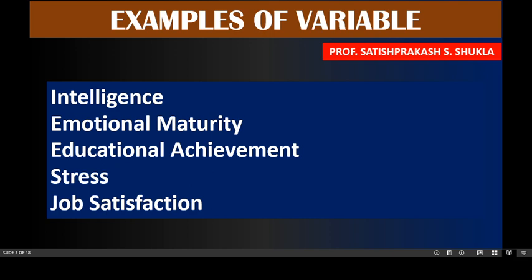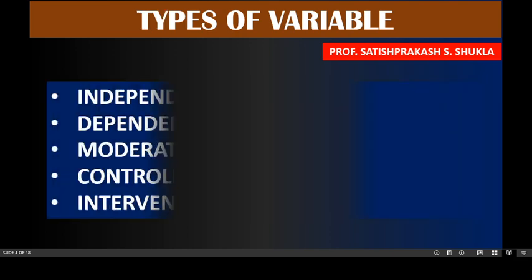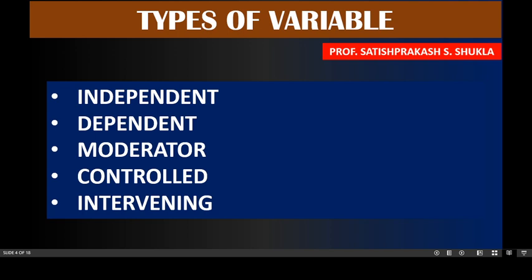So these all are the variables. Now we will see the types of variables. There are five types of variables: independent, dependent, moderator, controlled, and intervening. We will discuss about all these, but we will start with the meaning of independent variable.